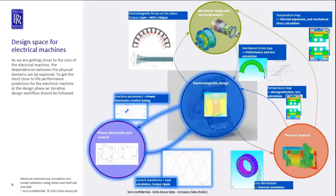Last year at the JMAG user conference, I already covered one design loop — the loop between thermal analysis, magnetic analysis, and structural analysis of the machine, and how we can feed the magnetic stresses back into JMAG, which affects the losses in the core and the overall B-H curve of the machine. Today I will focus on the other design loop: power electronics and electromagnetic design, passing machine parameters into Simulink, generating waveforms including PWM current ripples, and how this affects electrical machine losses and performance.